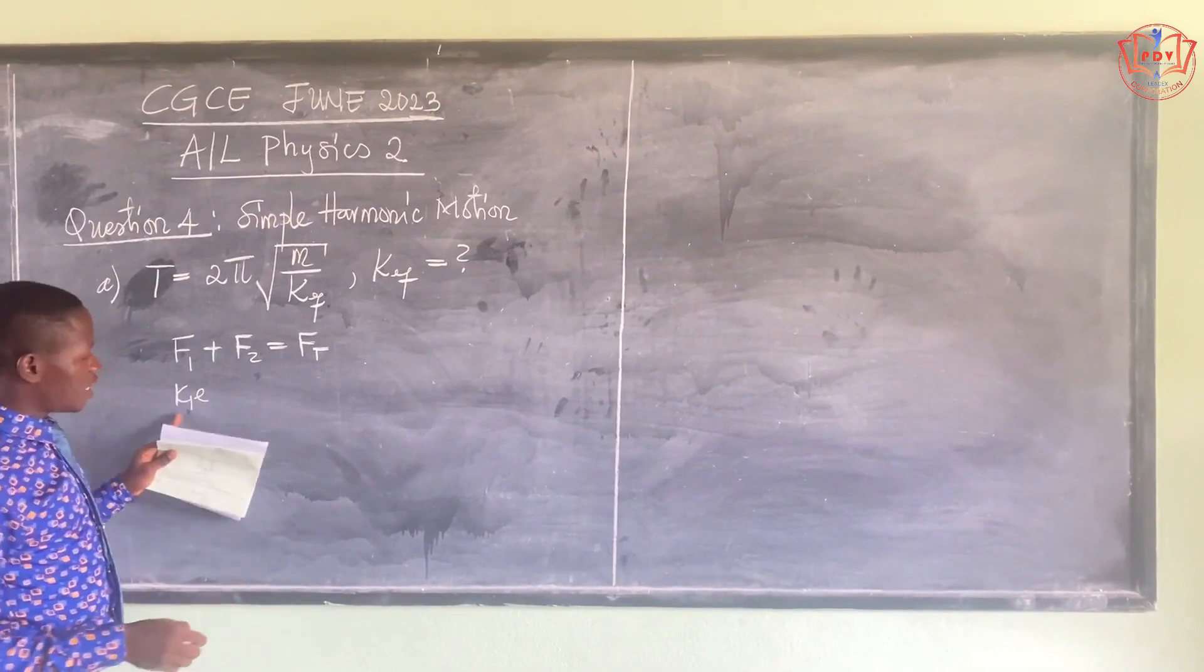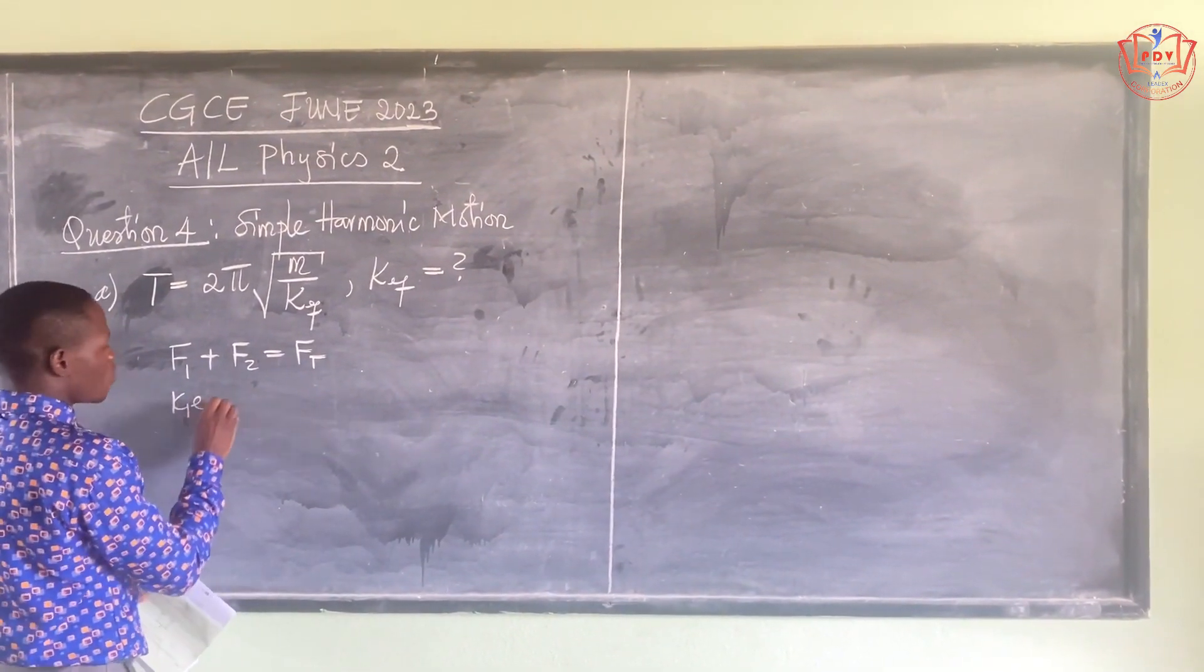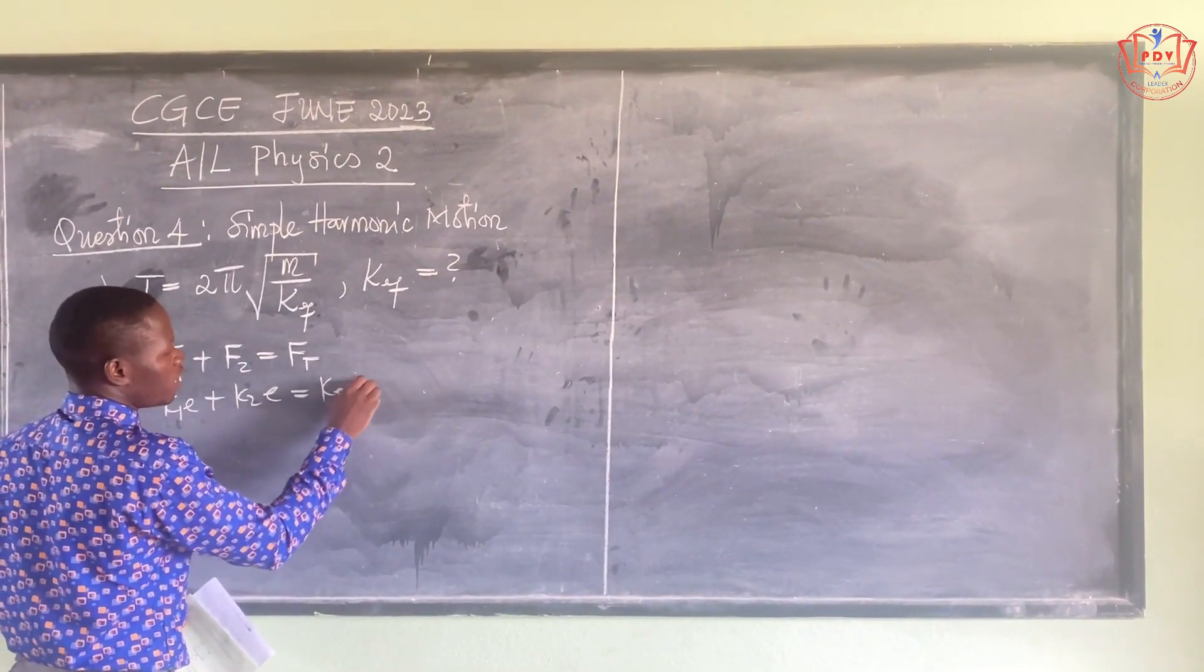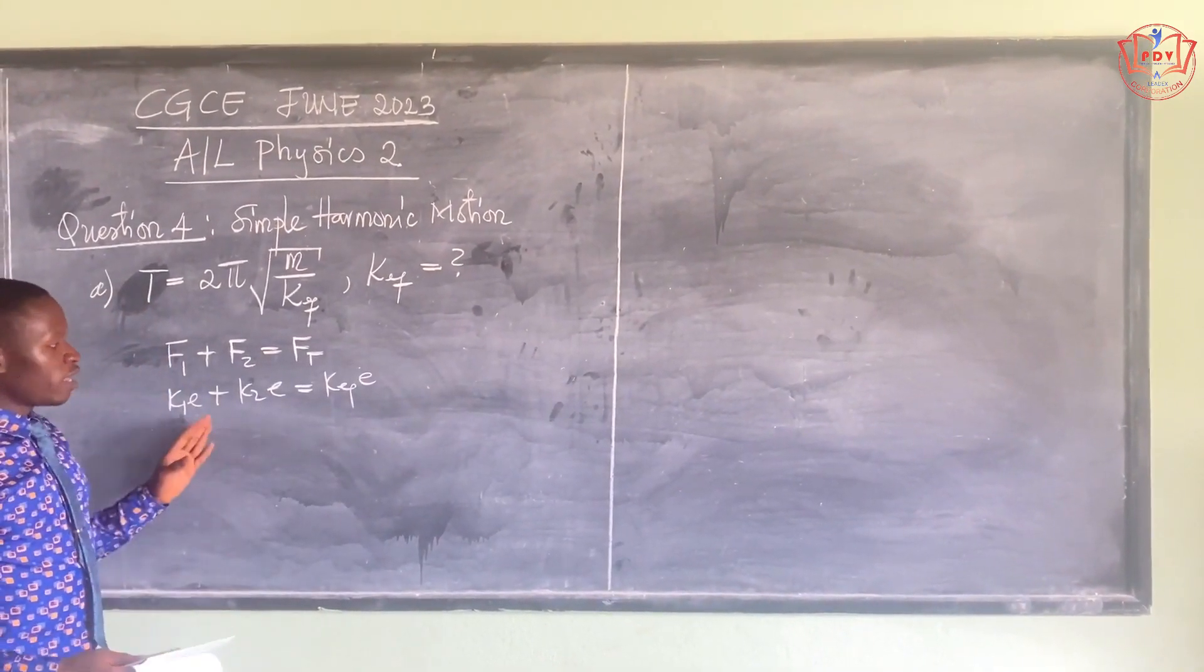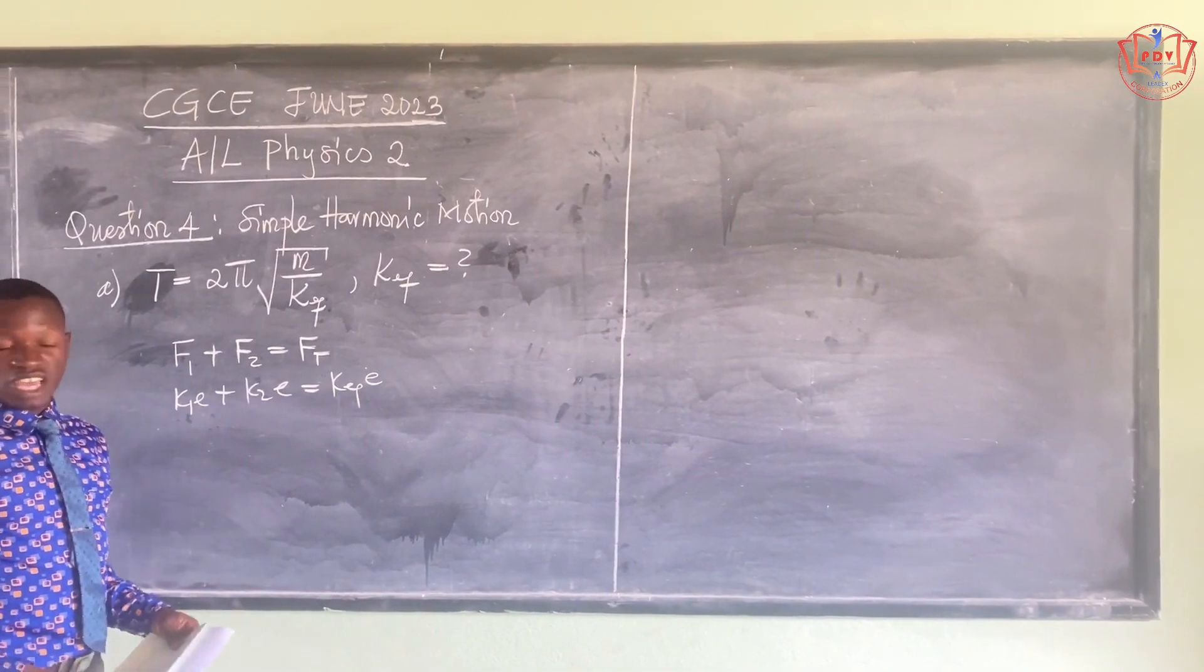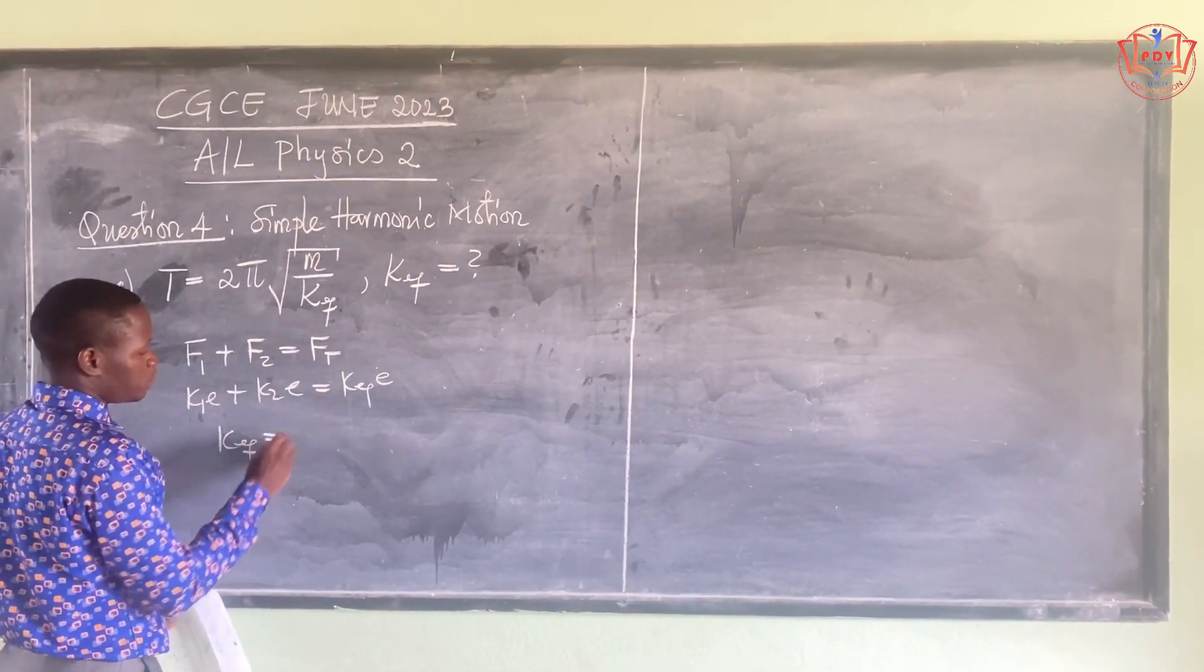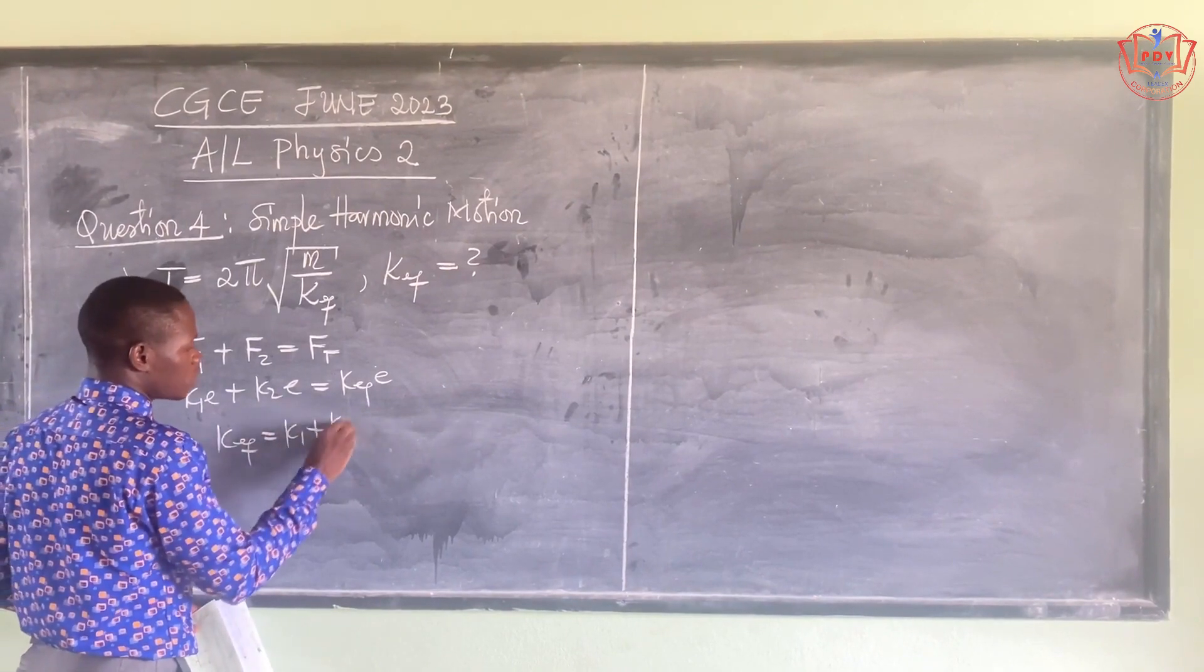So from there we have that the equivalent spring constant is k1 plus k2. So this is the expression for the equivalent spring constant where springs are in parallel, as given in the figure.